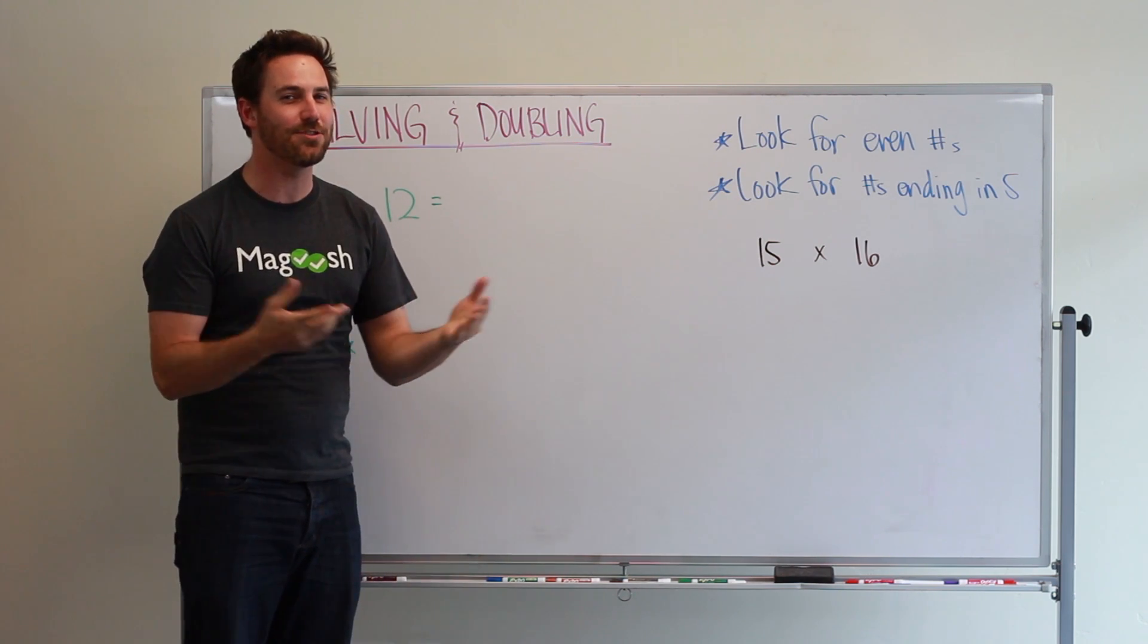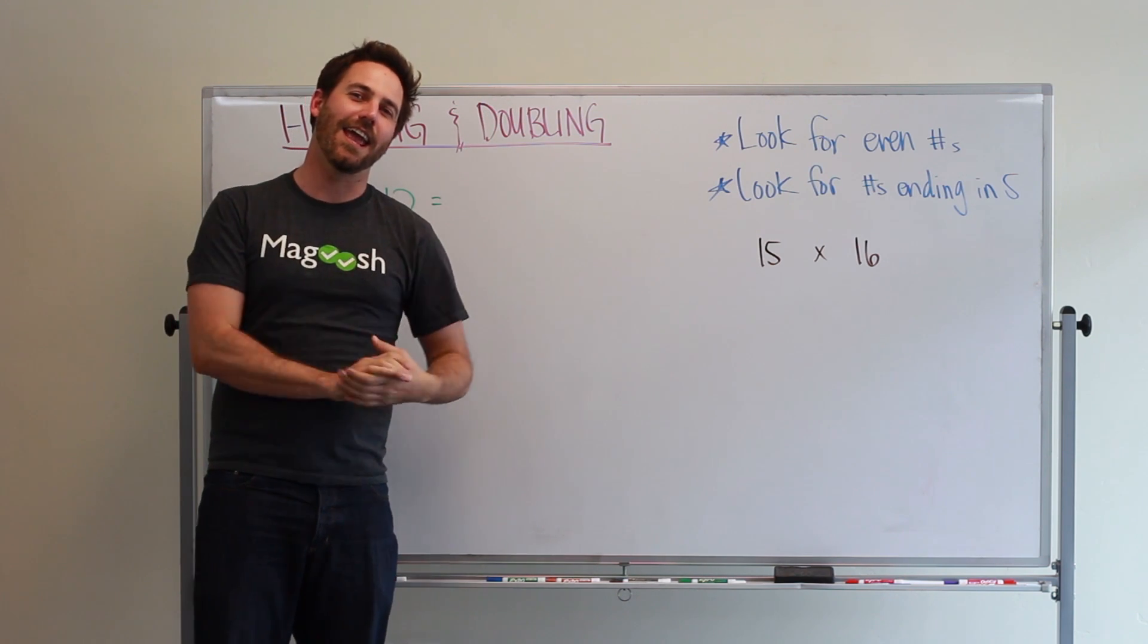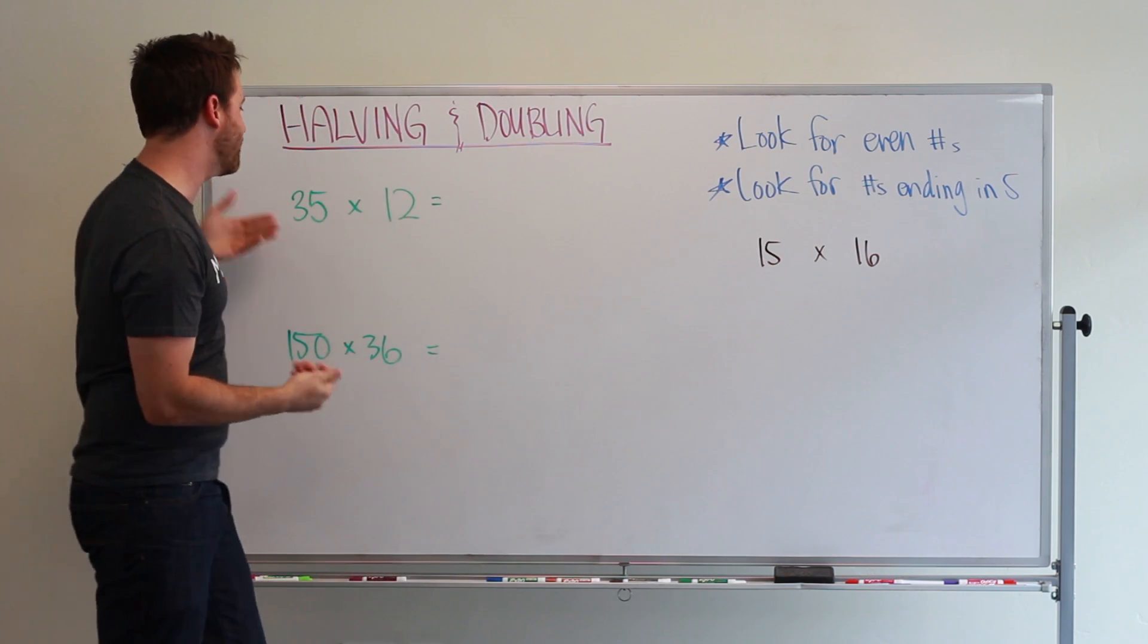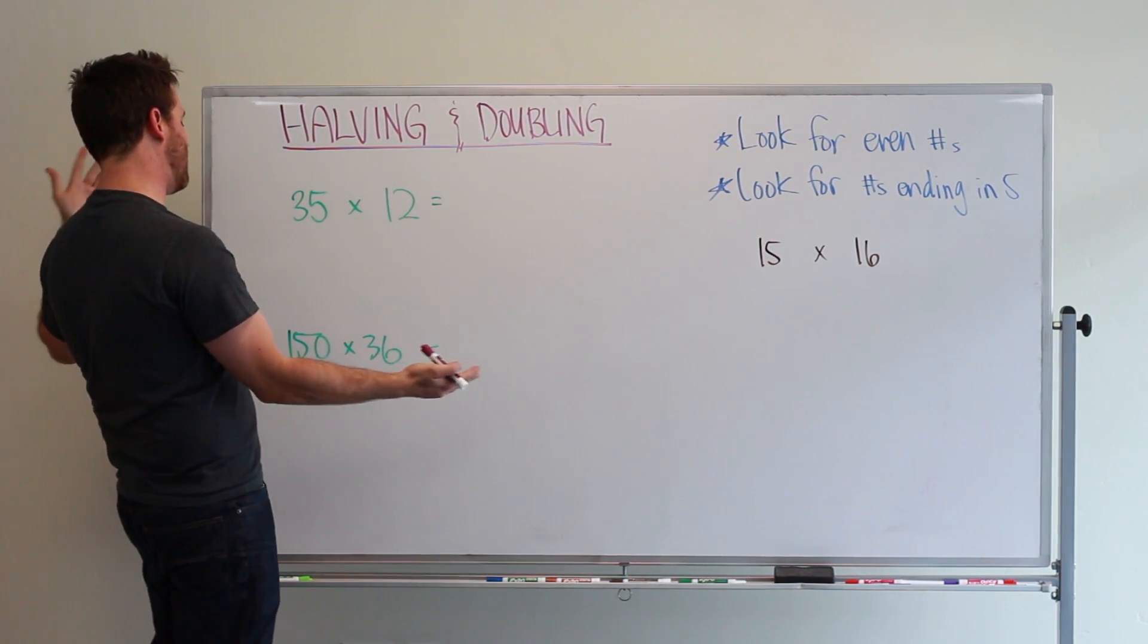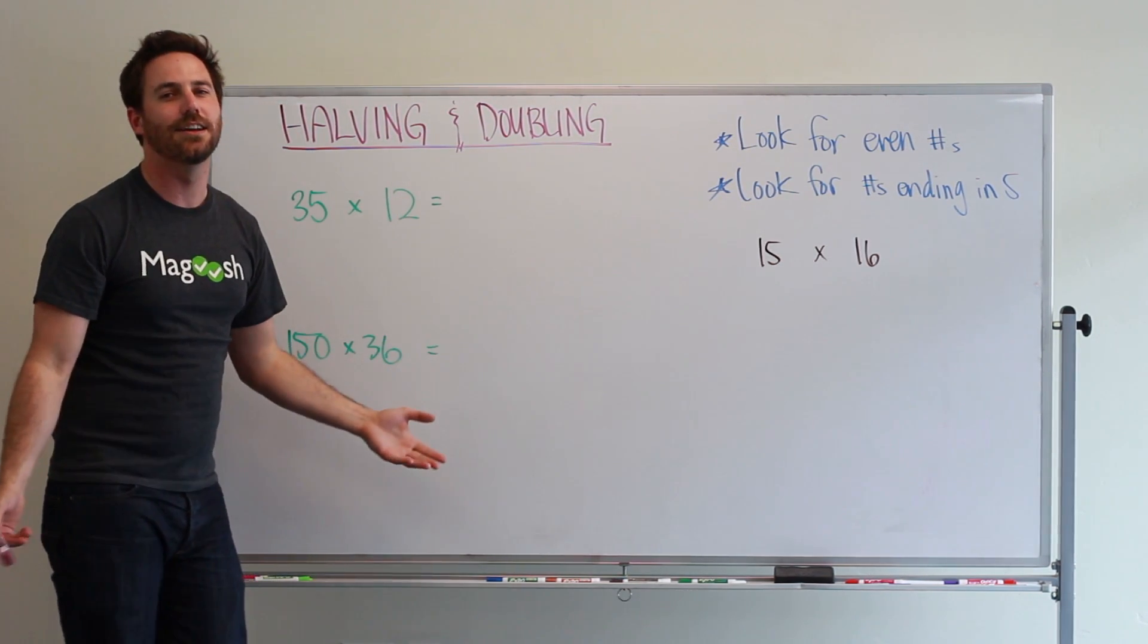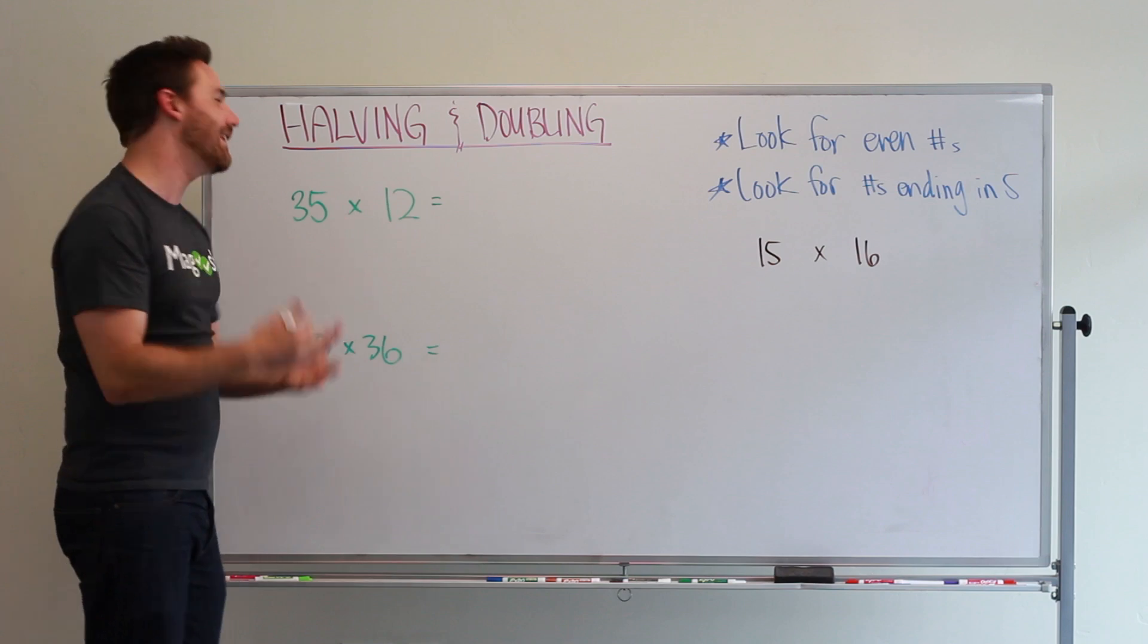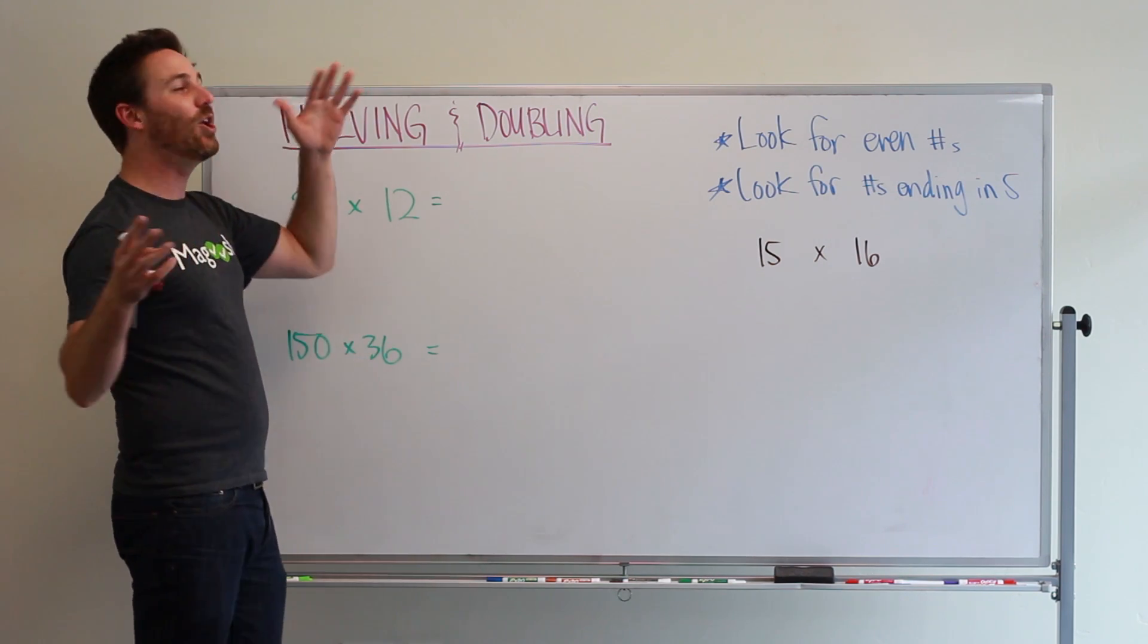As you know, no calculators on the GMAT, and you might encounter some problems that seem pretty tough to solve like 35 times 12 or 150 times 36. How do I solve these? Do I have to write it out? No!